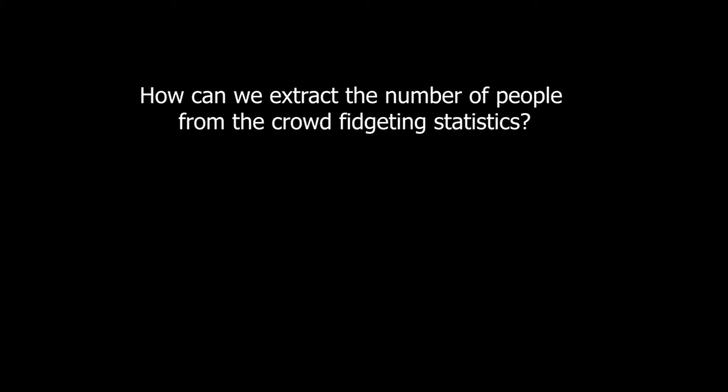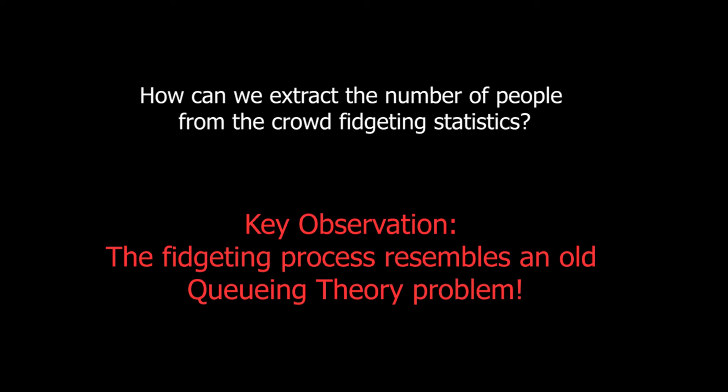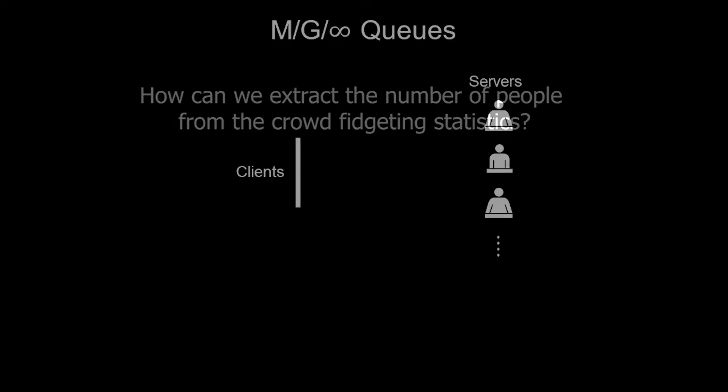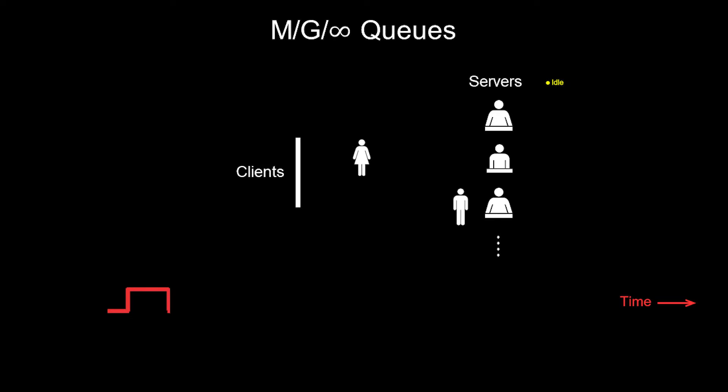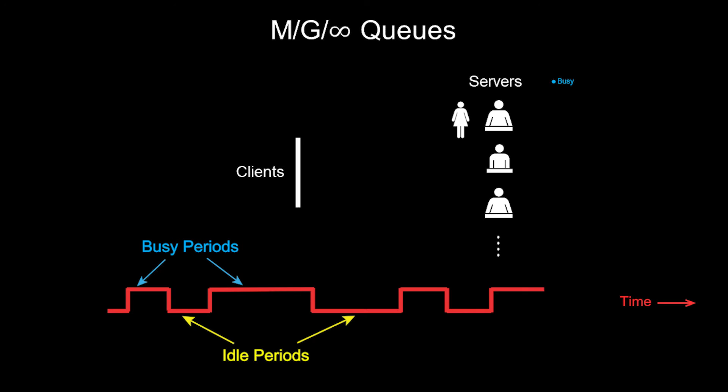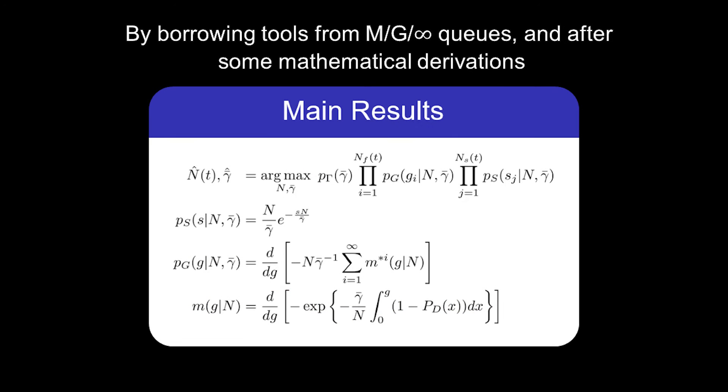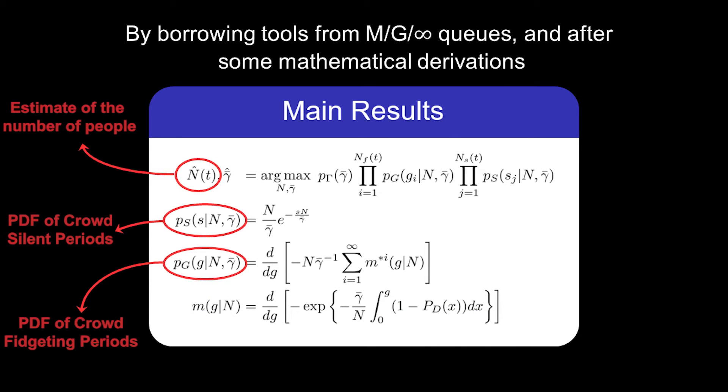But how can we extract the number of people from these crowd fidgeting and silent periods? Our key observation is that this problem resembles an old queuing theory problem. Consider an M/G/infinity queue. The busy and idle periods of this queue resemble our crowd fidgeting and silent periods. By borrowing tools from queuing theory, we then estimate the total number of people from the crowd fidgeting and silent periods.